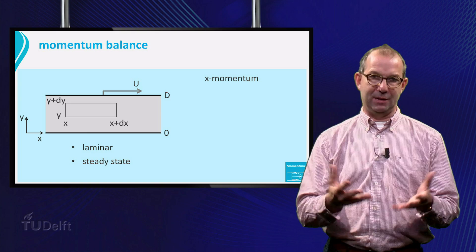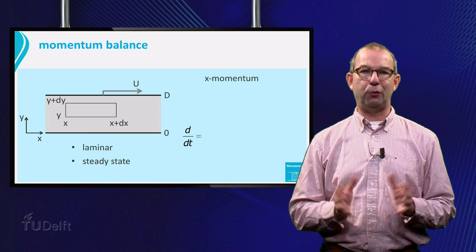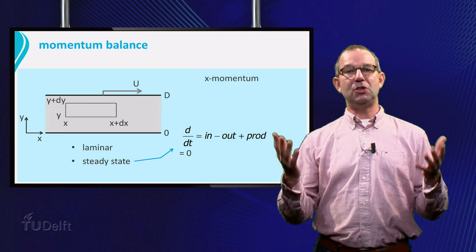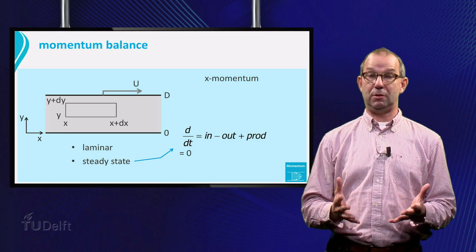Now we need to set up a momentum balance, starting with the usual form: d dt equals in minus out plus production. The d dt term is zero as we consider a steady state.